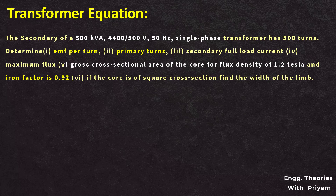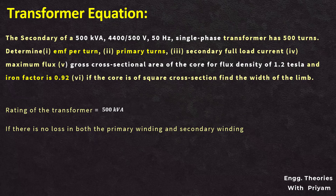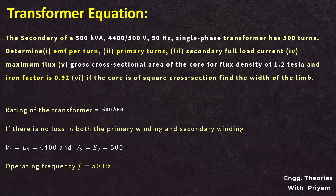Now let's see another question. Here we are given a 500 kVA transformer with a voltage rating of 4400 by 500 volt and the number of turns in the secondary equal to 500, operating as a 50 hertz single-phase transformer. We need to determine the EMF per turn, primary turns, secondary full load current, maximum flux, gross cross-sectional area of the core for a core flux density of 1.2 tesla and iron factor of 0.92.